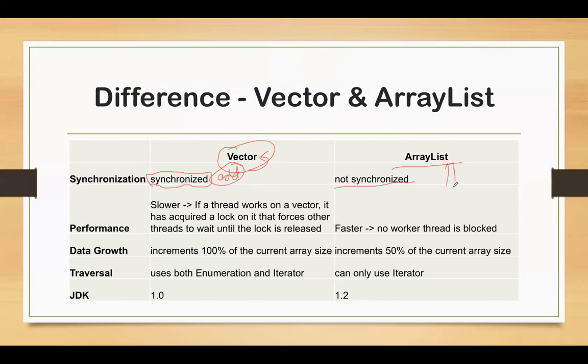That means for a given list, multiple threads can perform their work in parallel, which impacts their performance. That is why Vector becomes slower and ArrayList becomes faster.